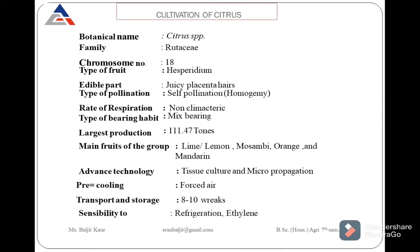The citrus tree bears fruits throughout — at the top, in the middle, and the terminal portion also exhibits a bearing habit. There are a number of fruits in this citrus group. The main fruits of this group are lime, lemon, samba, orange, mandarin, grapefruit, and so on. Many different fruits are associated with this group.